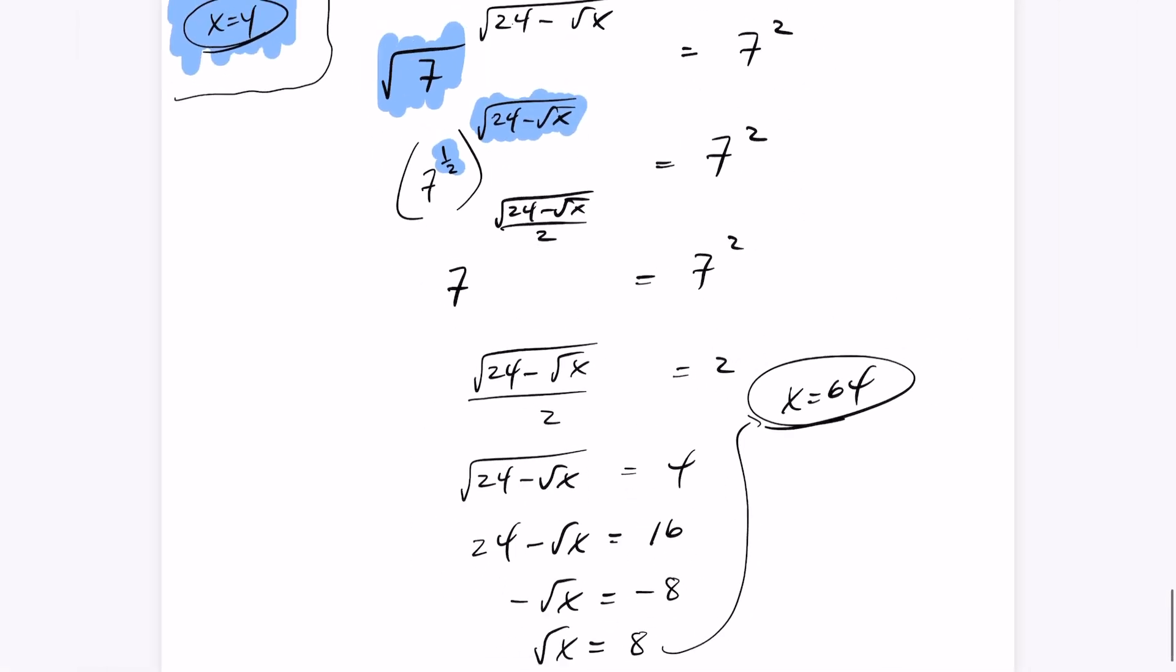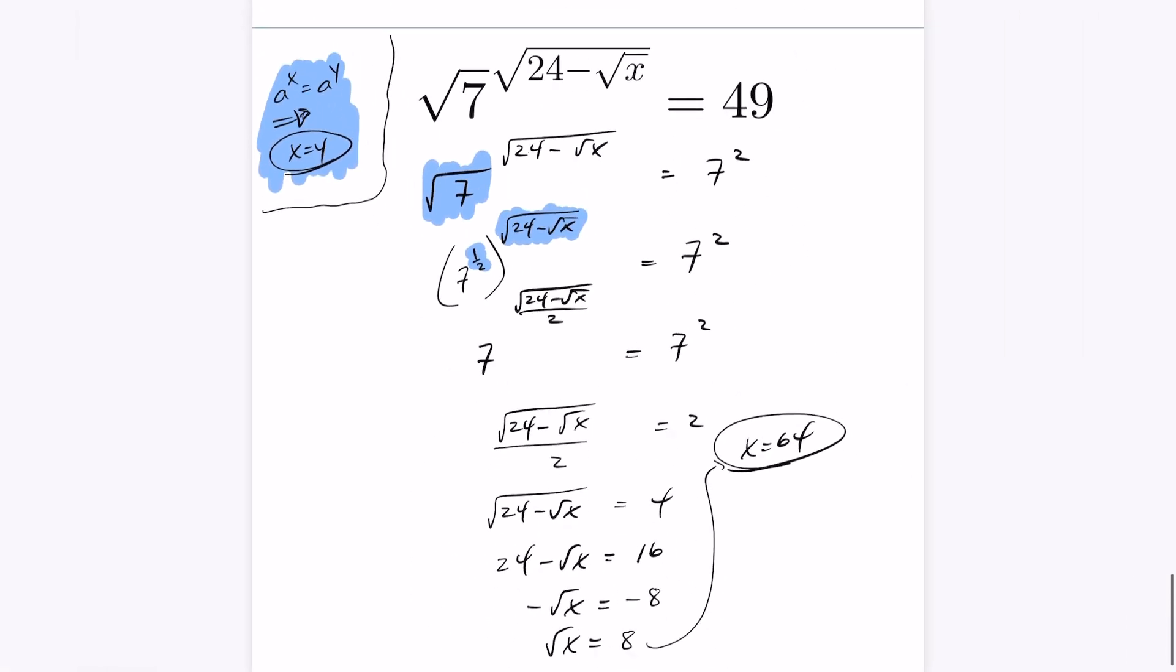So for this answer, I got 64. You can check it. We did square both sides, so it could be a situation where you have an extraneous root.